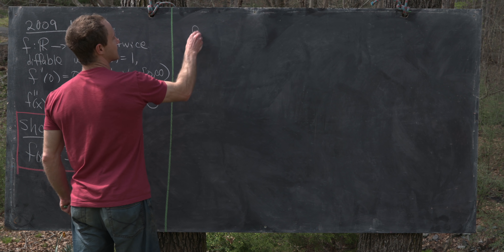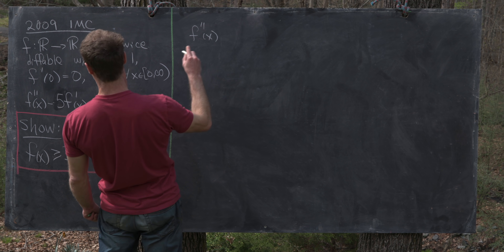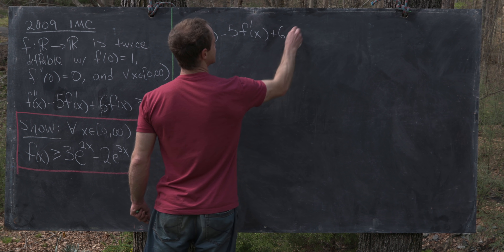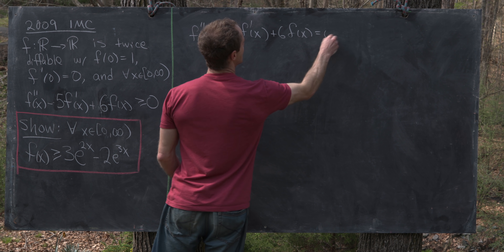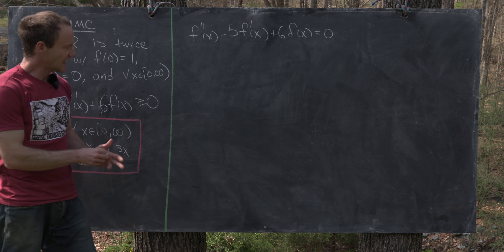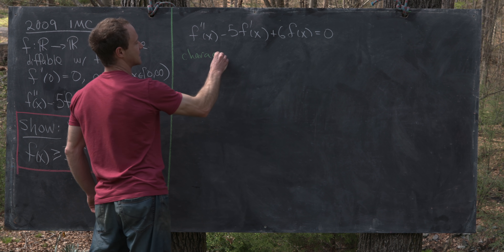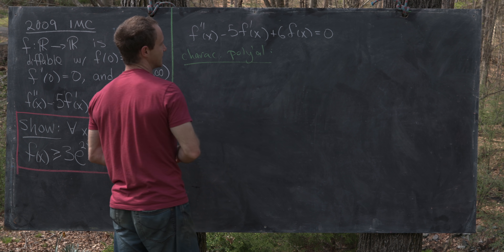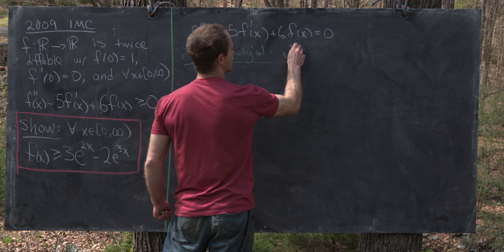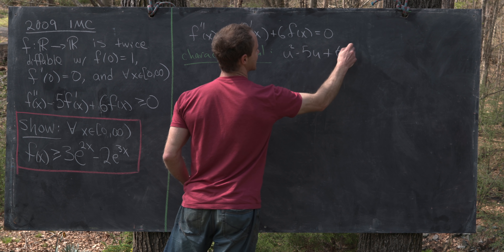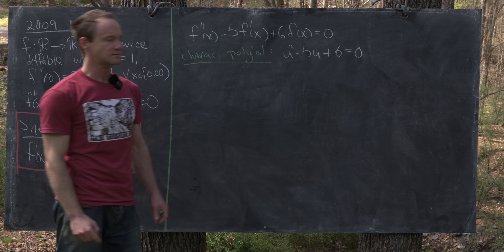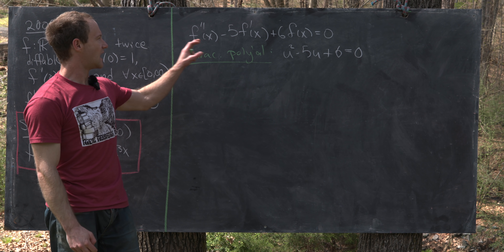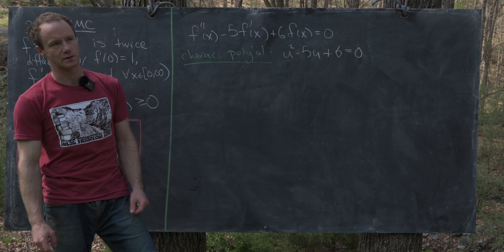We want to solve the differential equation f''(x) − 5f'(x) + 6f(x) = 0. This has a characteristic polynomial given by u² − 5u + 6 = 0, and the roots of the characteristic polynomial give us a lot of information about the solutions to this differential equation.